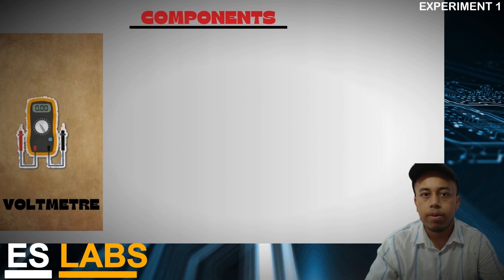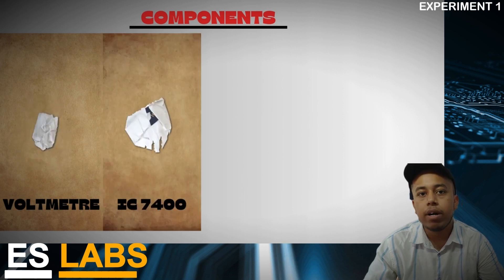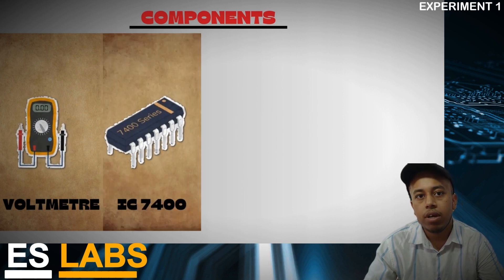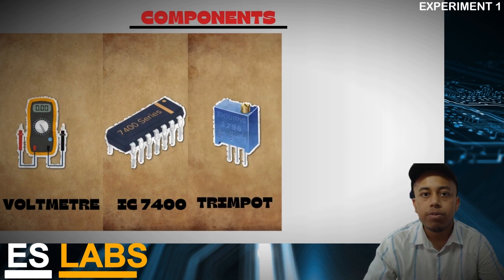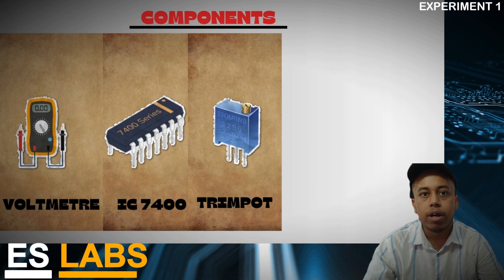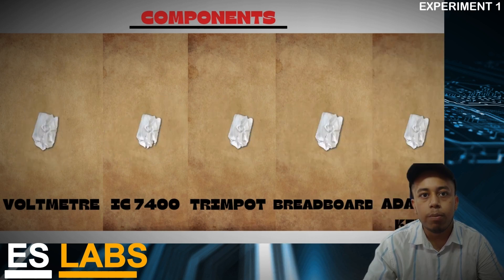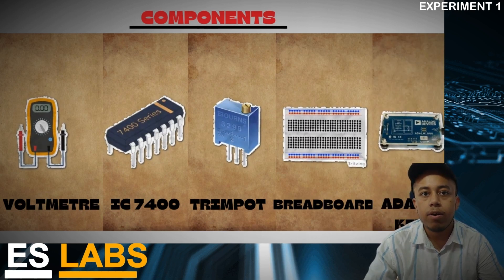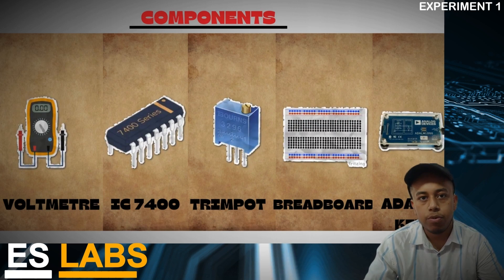So this is the first step of the experiment. The first component that we need is the voltmeter. We are using it to measure resistance and voltage in the experiment. The second component is IC7400. It has 4 NAND gates but we are using only one in this experiment. The third device is the trim pot. We are using this to get variable resistance. The fourth component is breadboard which we are using to make our circuit. And the fifth component is ADALM kit which we are using as a power source. So now let's move to step two.